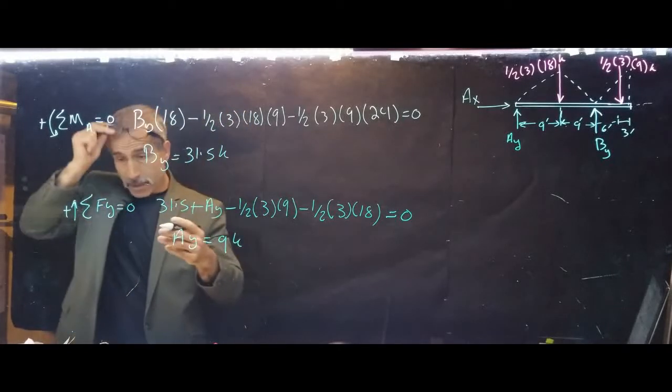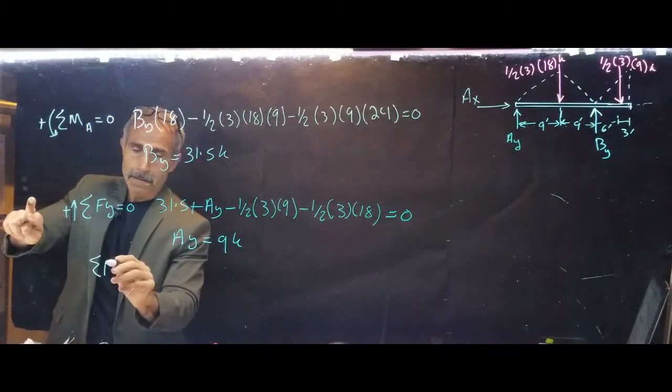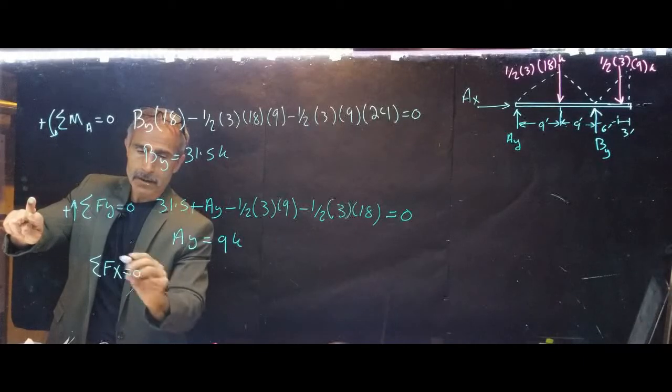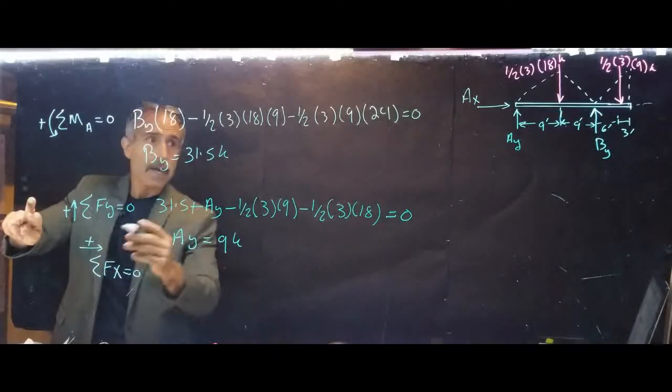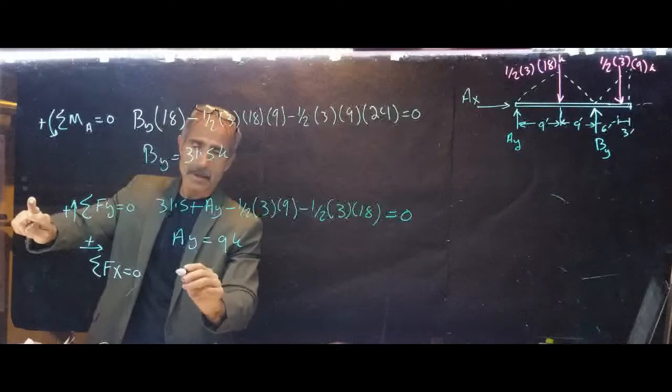The third one is summation Fx equals zero. Let's assume going this way is positive, and there's nothing there, so we're going to say Ax equals zero.